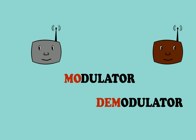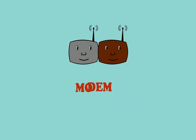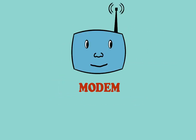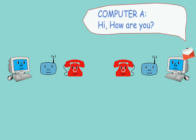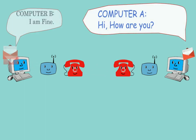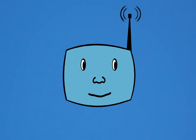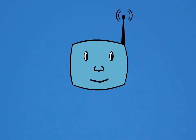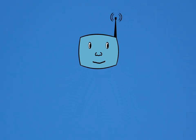As time passes, the modulator and demodulator combine together to form a single box named a modem. Now we can send and receive messages, and it became two-way communication. Everything became possible with the help of the one and only modem.